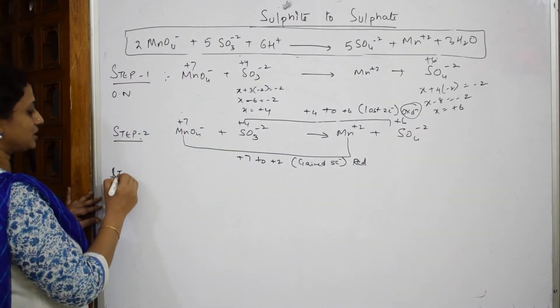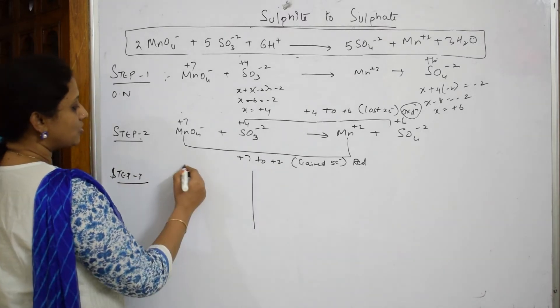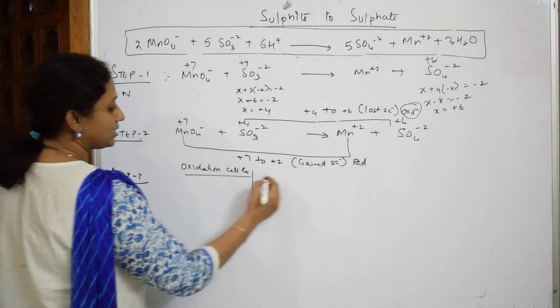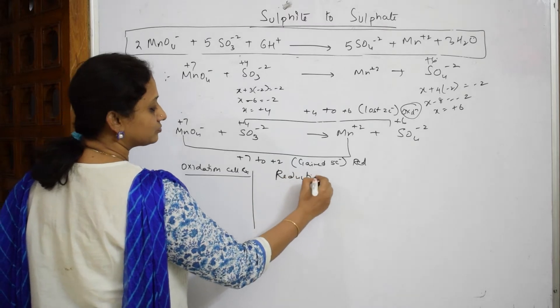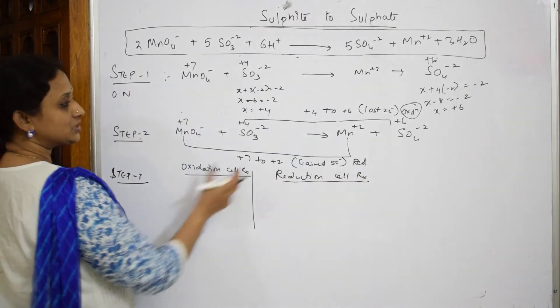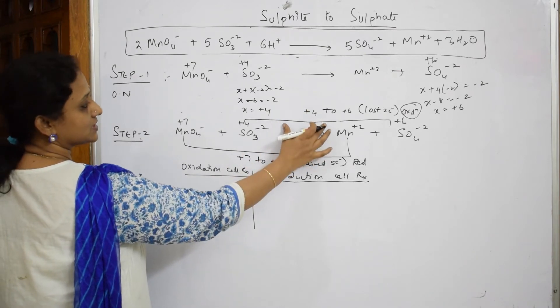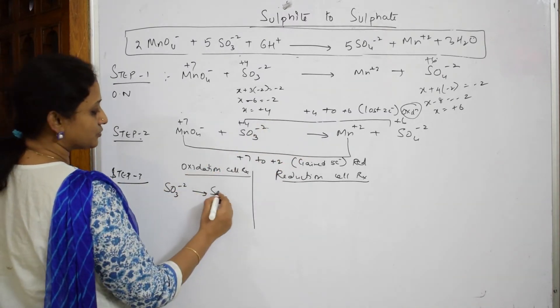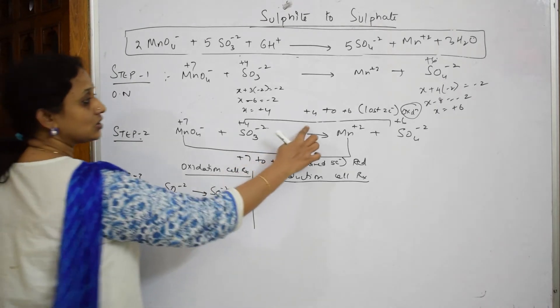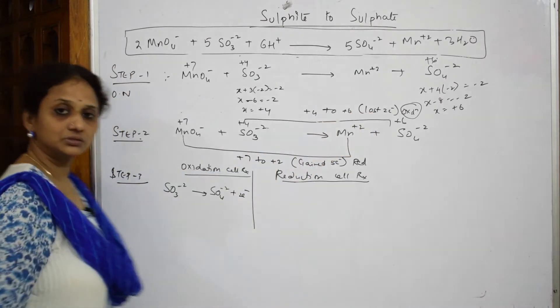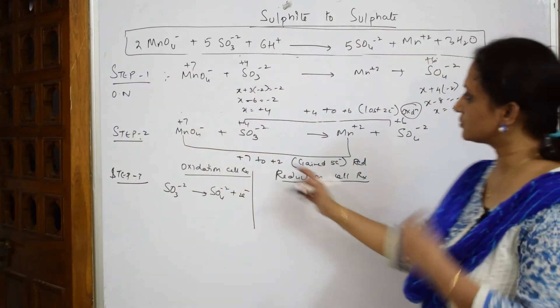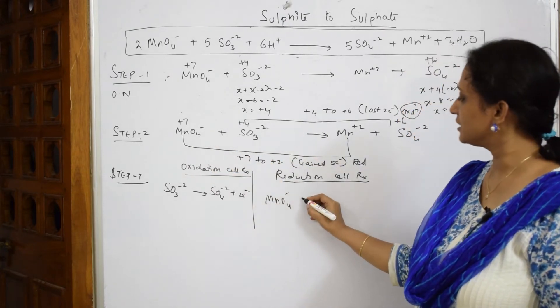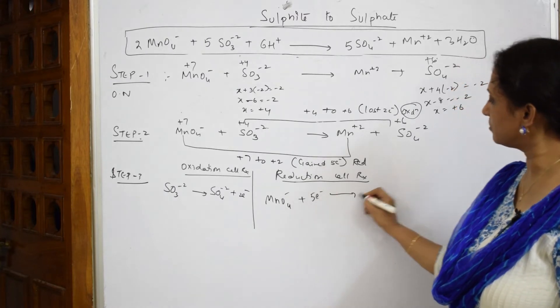Now you are going to write step 3, half cell reaction method. You are going to divide into oxidation or anodic cell reaction and reduction cell reaction. Oxidation: sulfate is oxidation, manganese is reduction. Write that sulfate reaction SO3^2- to SO4^2-. How many electrons has it lost? It has lost 2 electrons. Now come back and write the reduction part. Manganese has gained 5 electrons. MnO4^- plus it has gained 5 electrons to form Mn^2+.